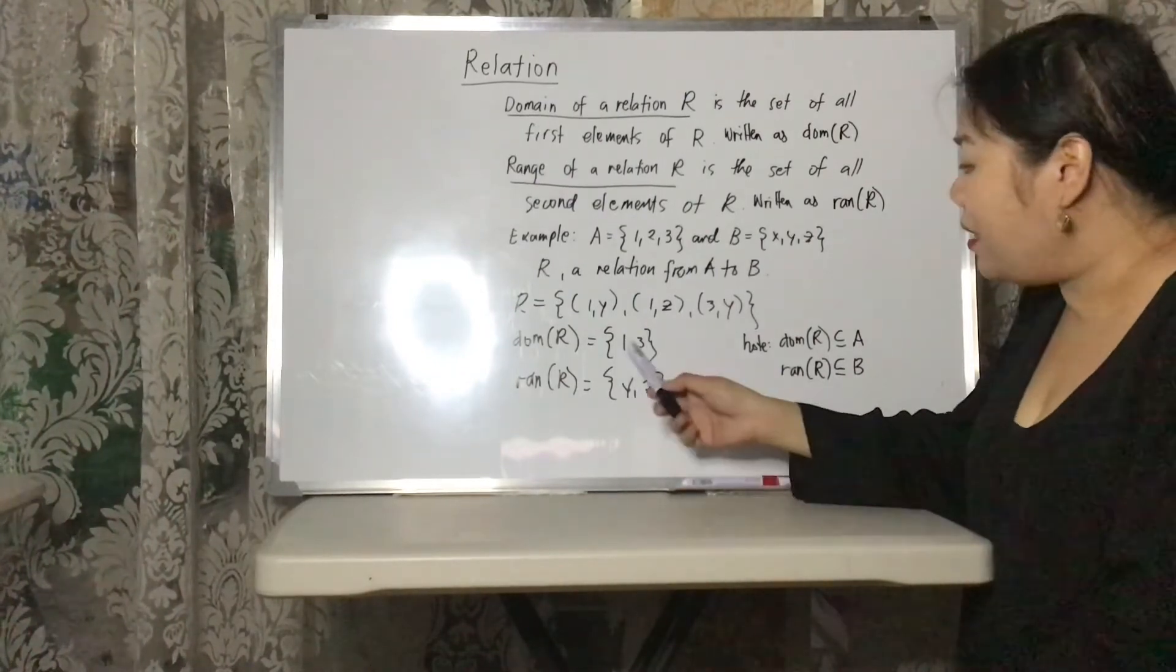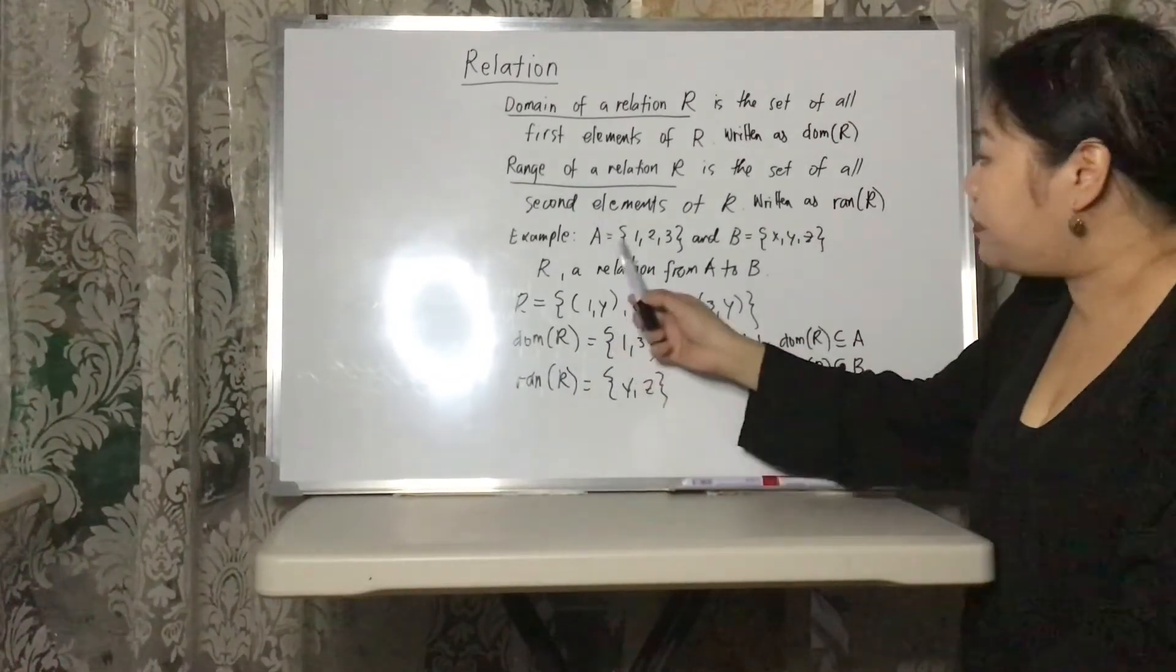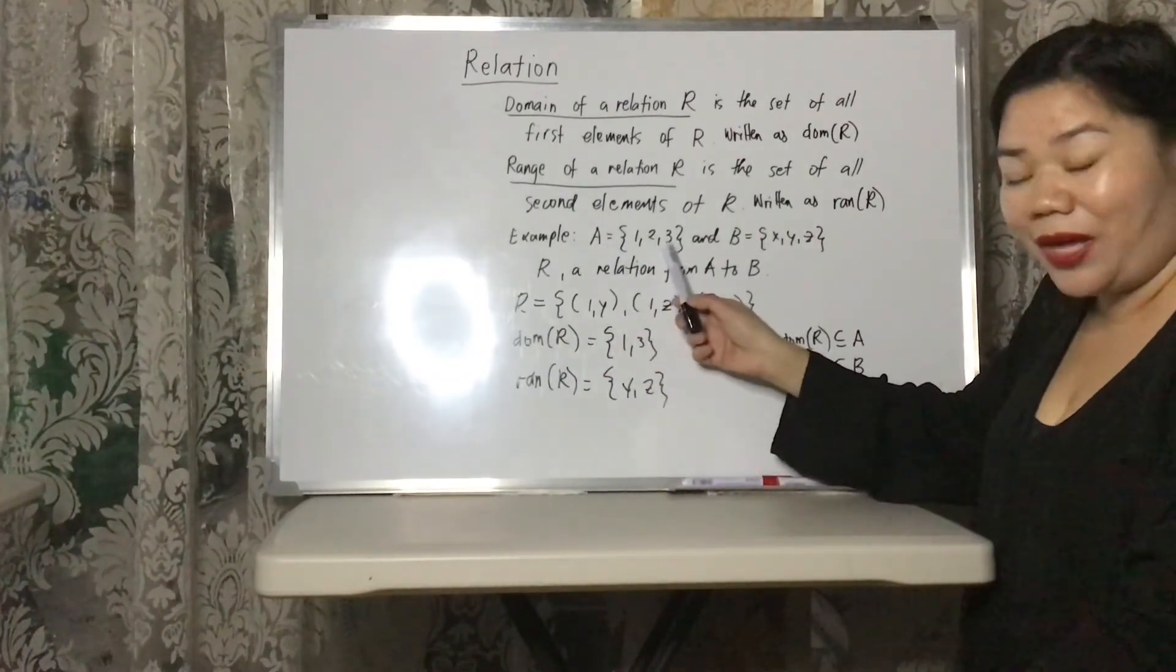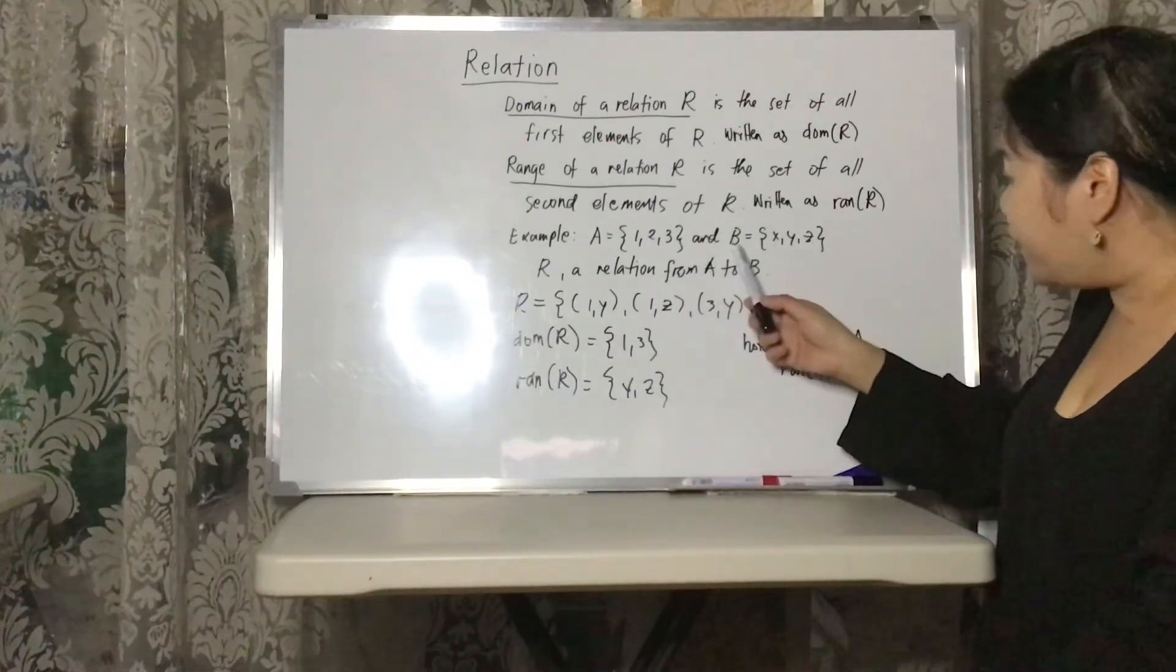Okay, so as you can see, the domain of R here is a subset of the set A. Okay, and also, the range of R is a subset of the set B. Alright?